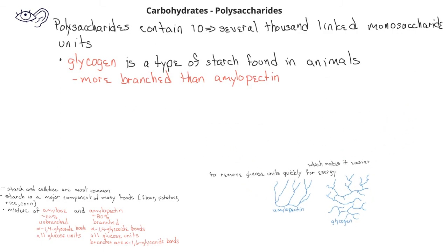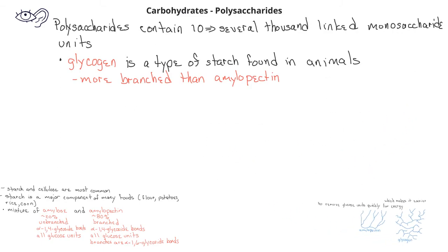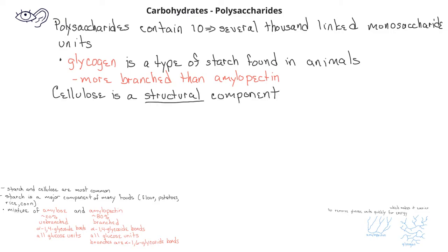While starch is typically a glucose storage unit and a source of energy in plants and animals, cellulose provides primarily structural components for plants. Cotton, for example, is composed of about 90% cellulose, and wood is about 50% cellulose.